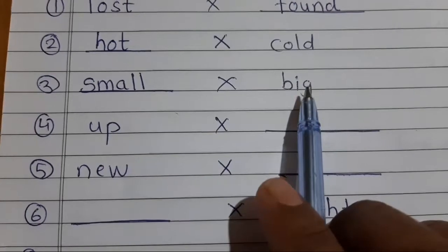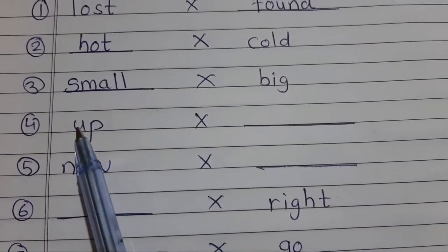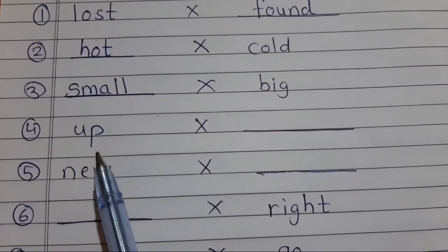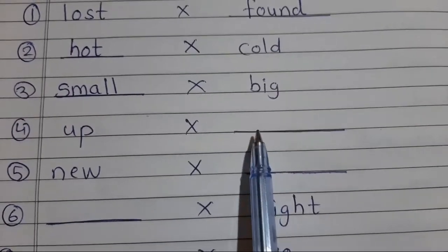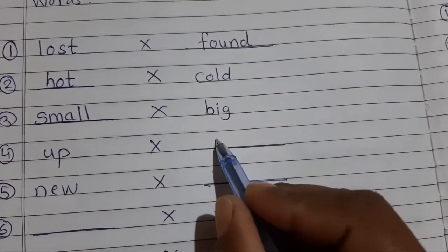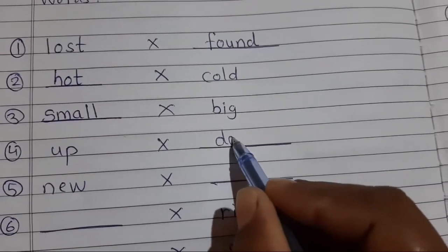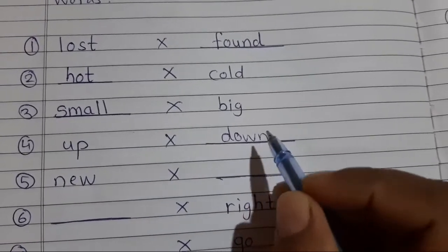The next is up. Up means upar. What is the opposite of up? Up and down. So write it down, D-O-W-N, down. See here, D-O-W-N like this way. Up, down. Down means niche, up means upar. Up and down.